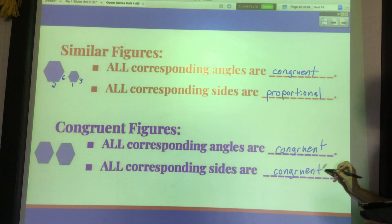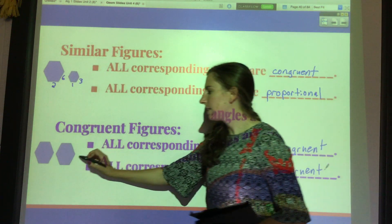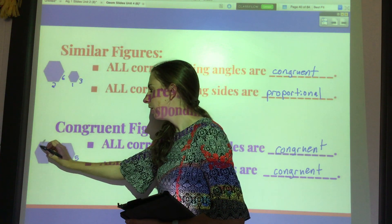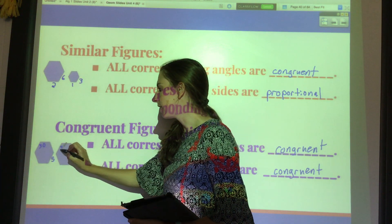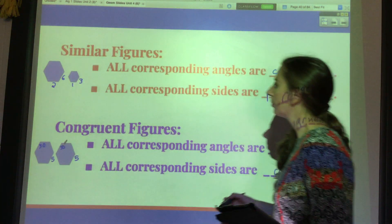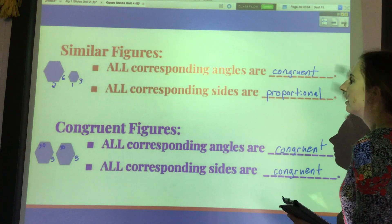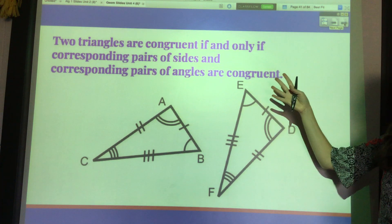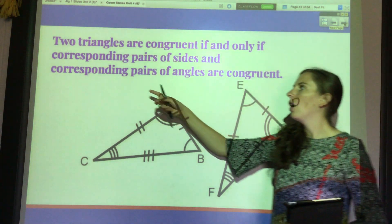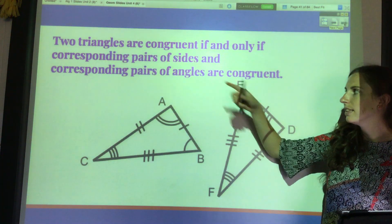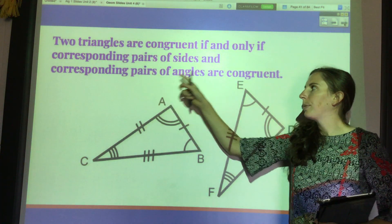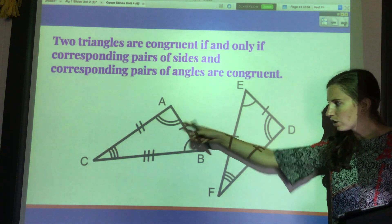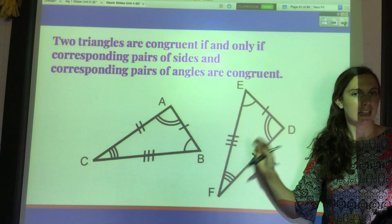With congruent figures, it's a little less work — literally everything is the same. Congruent is just a fancy math way of saying the same. All the corresponding angles are congruent, and all the corresponding sides are now congruent. If this side is 5, then this side is 5. If this is angle 30, then this is 30. Two triangles are congruent if and only if all the corresponding pairs of sides and all the corresponding pairs of angles are congruent.